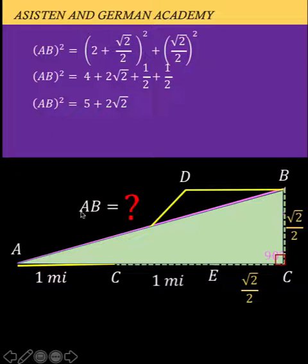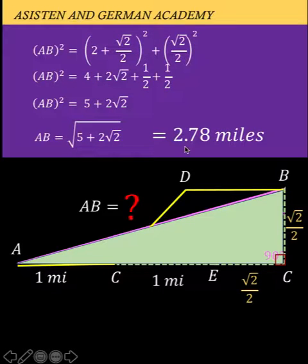We have the square of AB equals 5 plus 2 square root of 2. Therefore, the length of segment AB, which is our main goal in this problem, is now equal to the principal square root of 5 plus 2 square root of 2, which is approximately 2.78 miles.